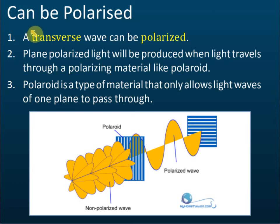Electromagnetic waves can be polarized. An electromagnetic wave is a combination of the vibrations of electric field and magnetic field. If these two fields are not coherent — meaning their frequencies are not the same — the combinations of these two fields will produce electromagnetic waves which vibrate in different directions. A non-polarized wave is a wave that vibrates in all directions.